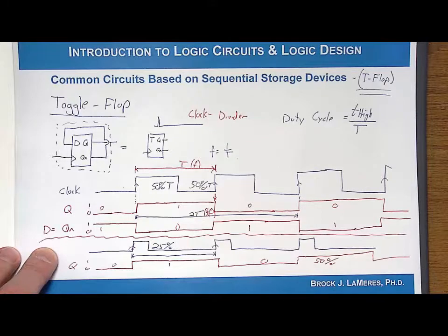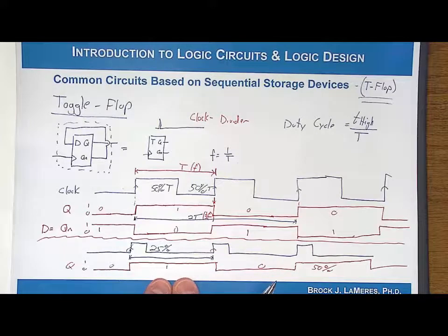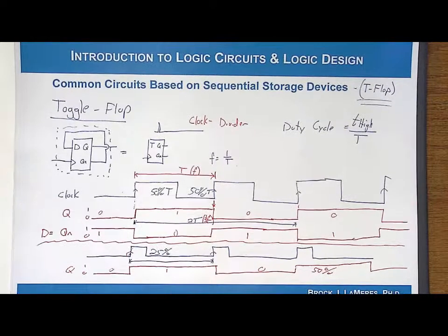So you not only divide the clock down and get half the frequency, you get a perfect 50% duty cycle. So toggle flops are used very commonly in clock divider circuits in order to clean up the clock cycle.